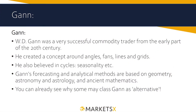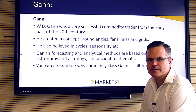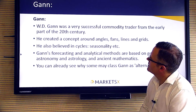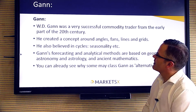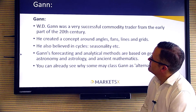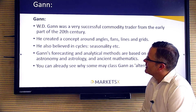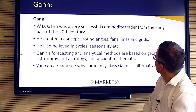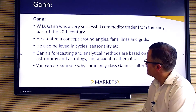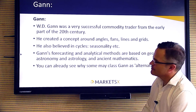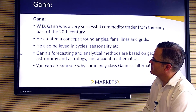So Gann — probably the most controversial one we'll look at today. WG Gann himself was an extremely successful commodity trader in the early part of the 20th century. He created a trading concept built around angles, fans, lines and grids, and he believed in cycles and seasonality. He built a methodology for forecasting and analysing the markets he traded, based around geometry, astronomy and astrology, with some very ancient mathematics in there for good measure as well.